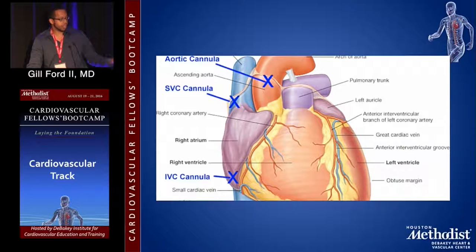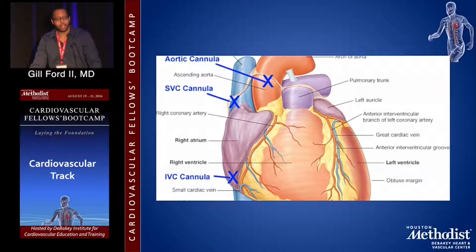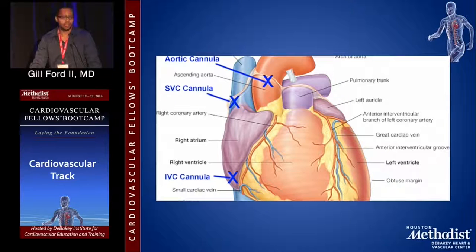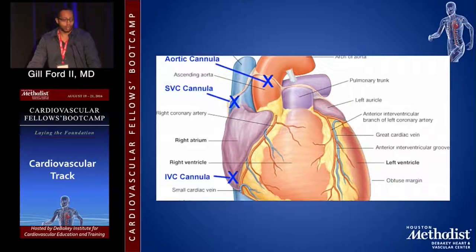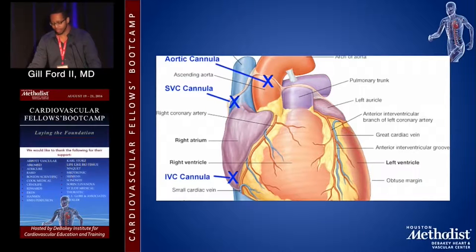Another site of cannulation, as Dr. Ramlaoui mentioned, is axillary cannulation, which is commonly used for ascending aortic aneurysms. If you don't have actual access to the ascending aorta because of the aneurysm, axillary cannulation also allows us to deliver antegrade cerebral perfusion, depending on whether we're going to have circulatory arrest.